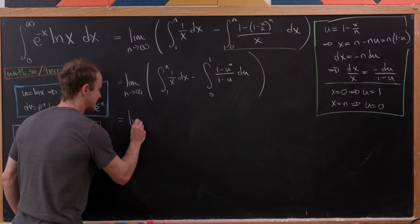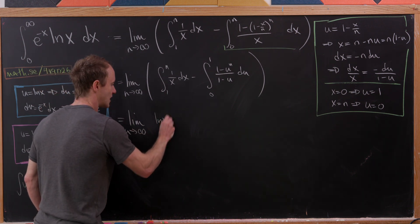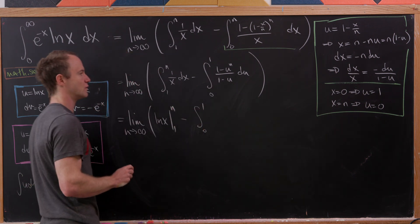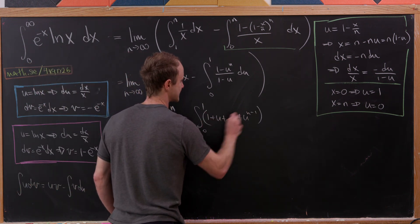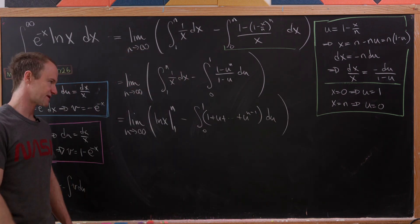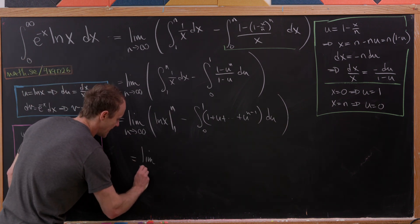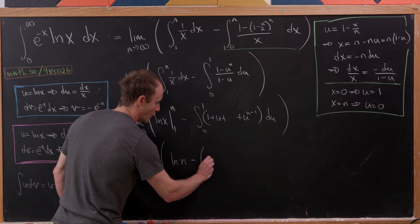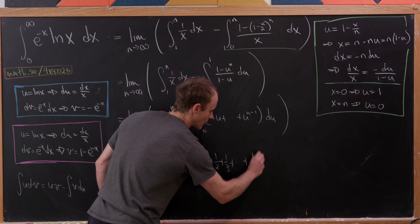That gives us the limit as n goes to infinity of the natural log of x evaluated from one to n, minus the integral from zero to one of 1 plus u plus all the way up to u to the n minus one, du — using the formula for a finite geometric series. Integrating that out and evaluating is fairly straightforward, and we end up with the limit as n goes to infinity of the natural log of n minus (1 plus one half plus one third, all the way up to one over n).